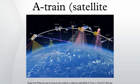Glory failed during launch on a Taurus XL rocket on March 4, 2011, and would have flown between Calypso and AURA.